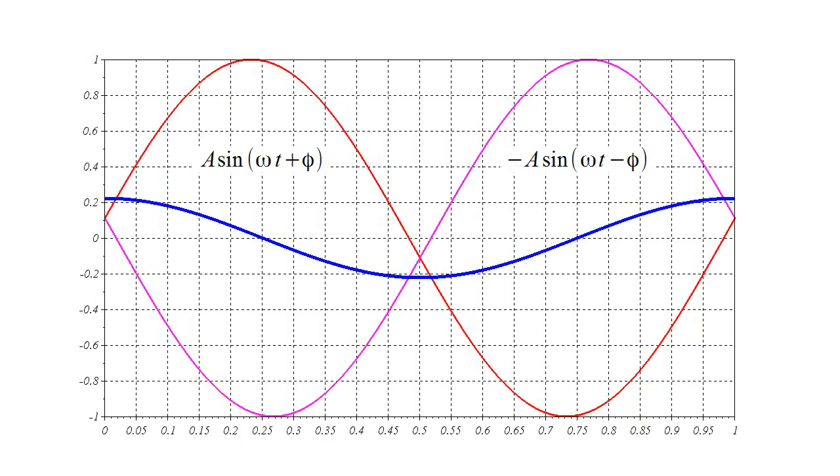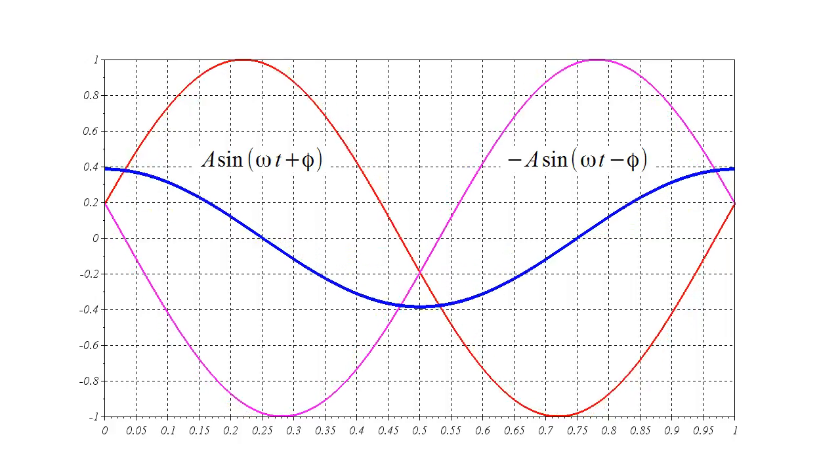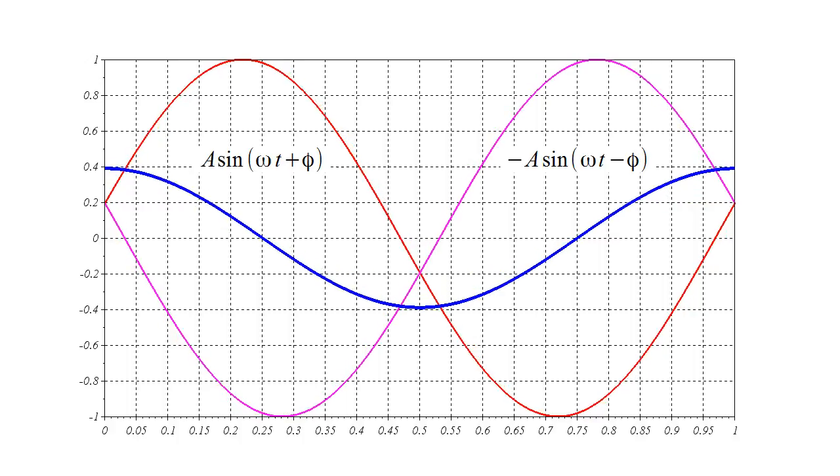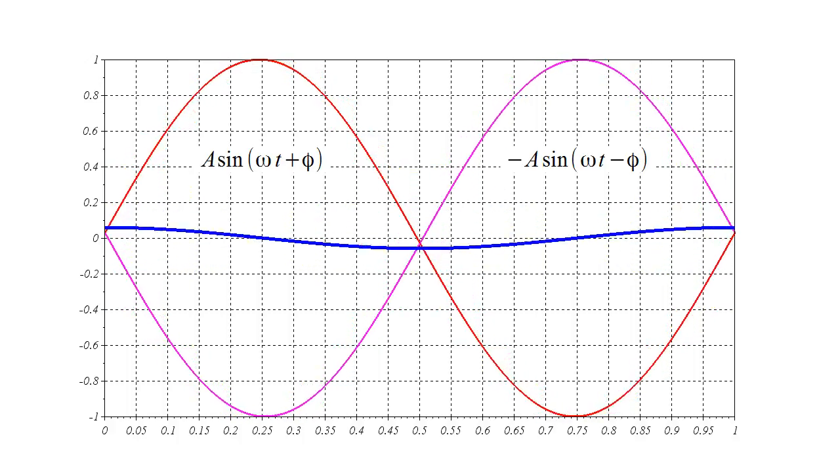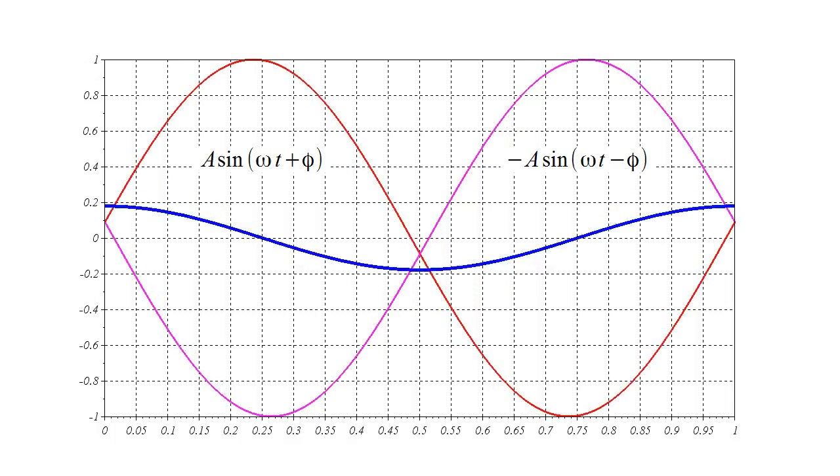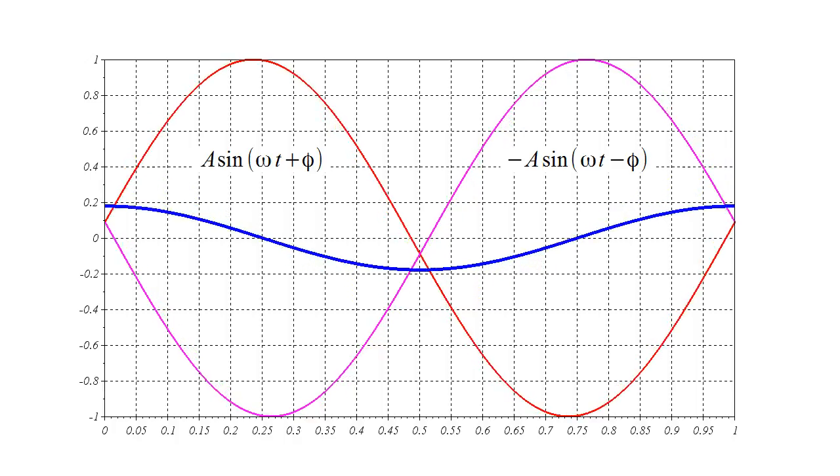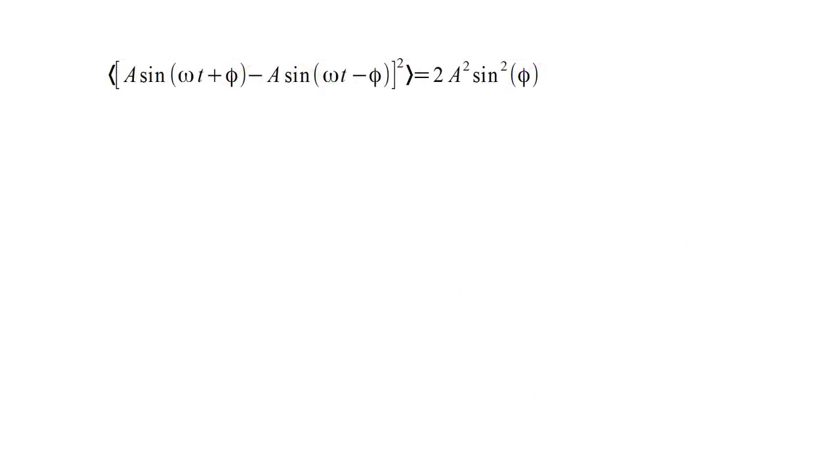Mathematically, the beams are sine waves with amplitudes a and minus a. They oscillate at optical frequency omega. Their relative positions are determined by a phase phi, which is proportional to the change in path length. One beam is shifted by plus phi and the other by minus phi. The detected optical power is the time average of the square of the sum of the two beams. This works out to a constant times the sine squared of phi.